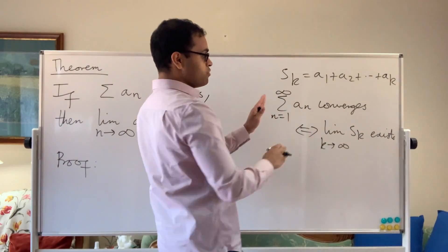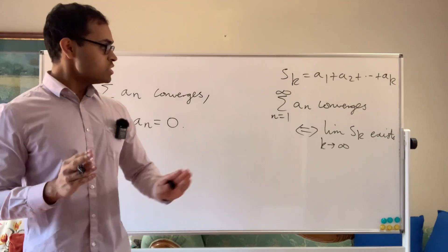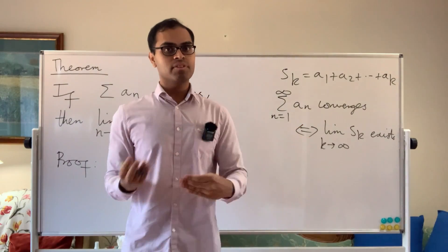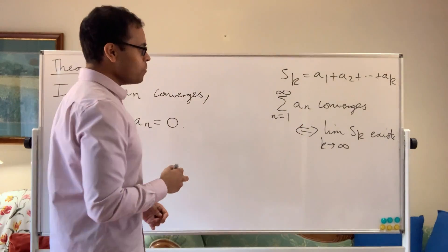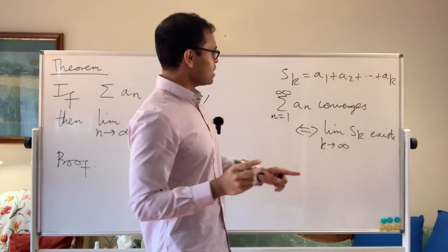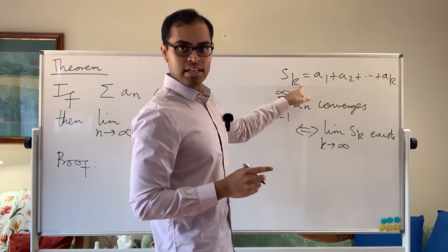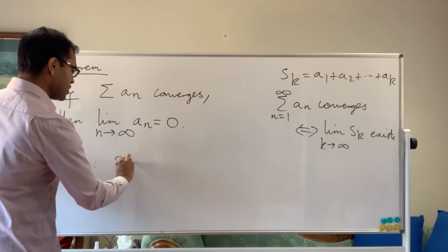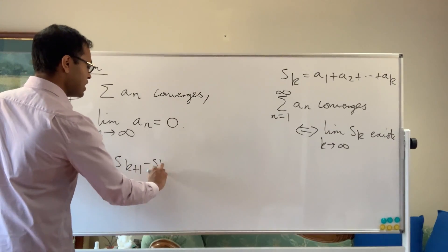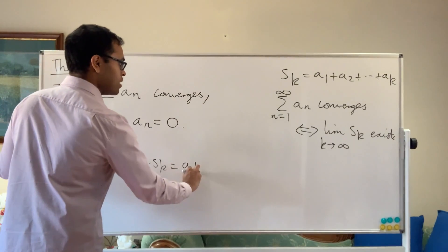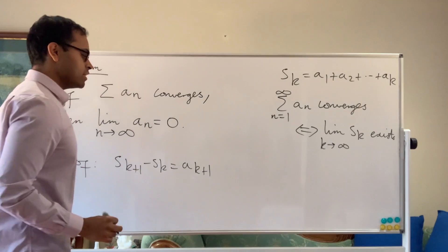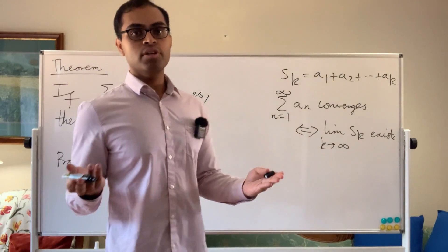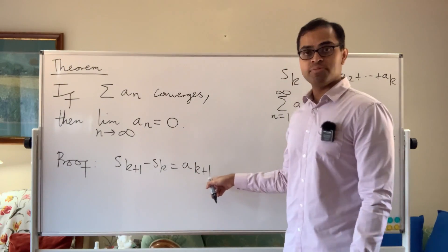So what we do is, if we know the sum converges, we're now going to use this property to show that the limit of the terms has to equal to zero. And that's actually a very beautiful argument. If we look at the partial sums, S_k, we know that S_{k+1}, so I'm just going to write it here, S_{k+1} minus S_k is going to equal to a_{k+1}, right? That's going to be the difference between two successive partial sums is the k plus first term in the series.